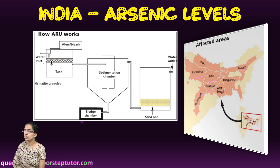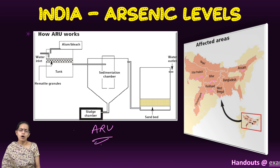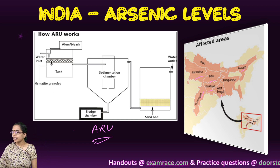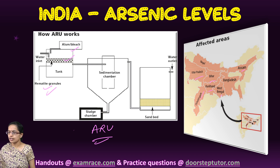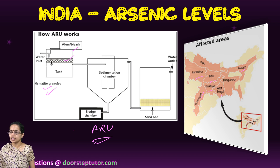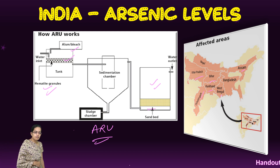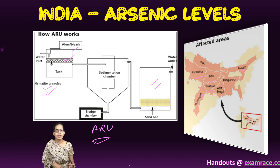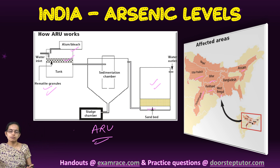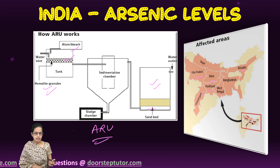In 2009, arsenic removal units were developed for domestic and commercial use. Using alum and hematite granules, water is moved through a sedimentation chamber and separated through a sand bath. The water collected at the end is essentially arsenic-free. Water containing less than 15 parts per billion of arsenic and less than 1 milligram per litre of iron is considered safe for drinking.